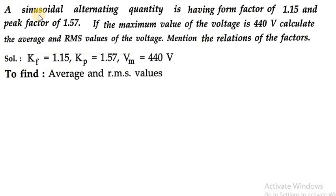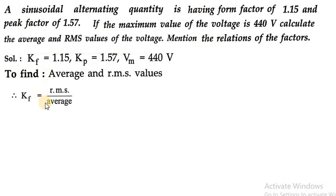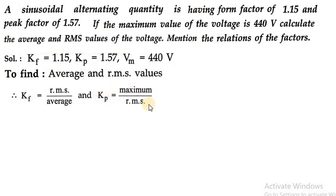Now let's move towards the first parameter, average value, and then we will see RMS value. Before calculating, we will recall what is form factor and what is peak factor. Form factor is the ratio of RMS value divided by average value, so Kf = RMS / average. Peak factor is the ratio of maximum value divided by RMS value, so Kp = maximum / RMS.